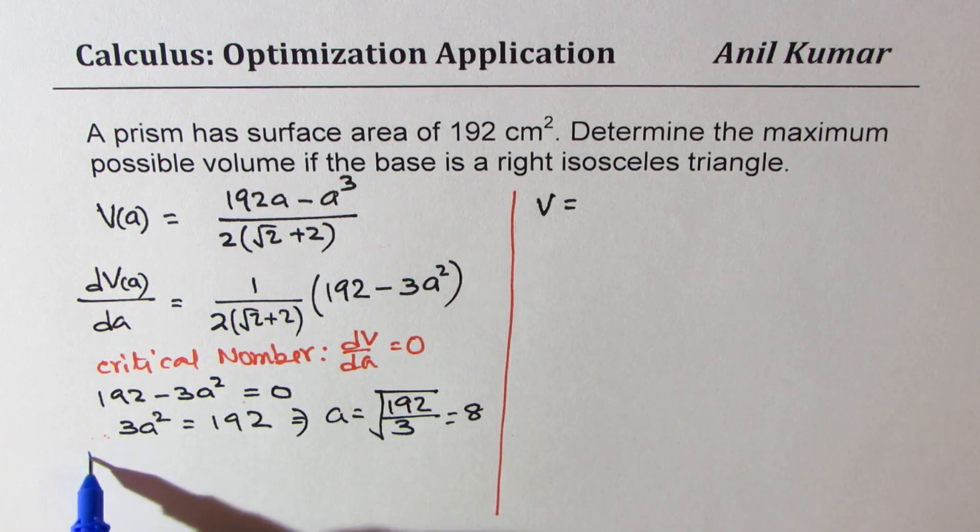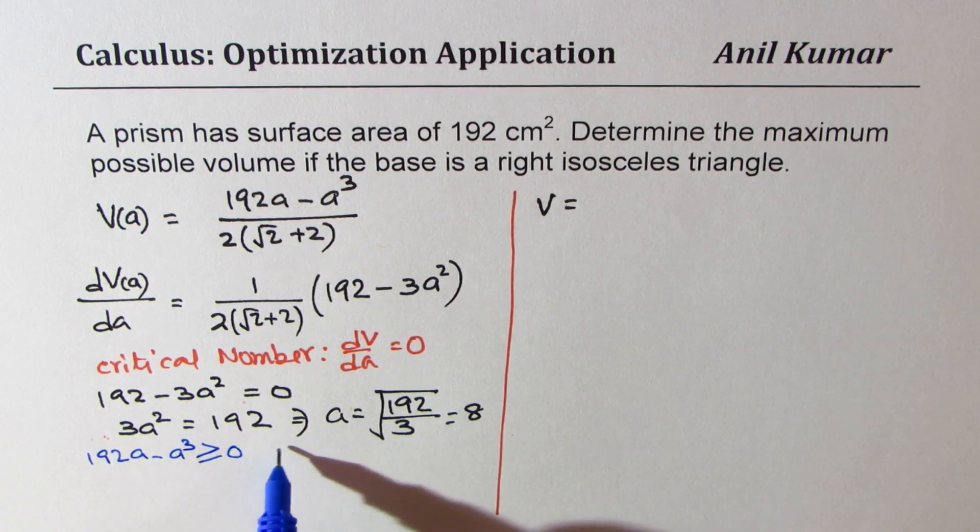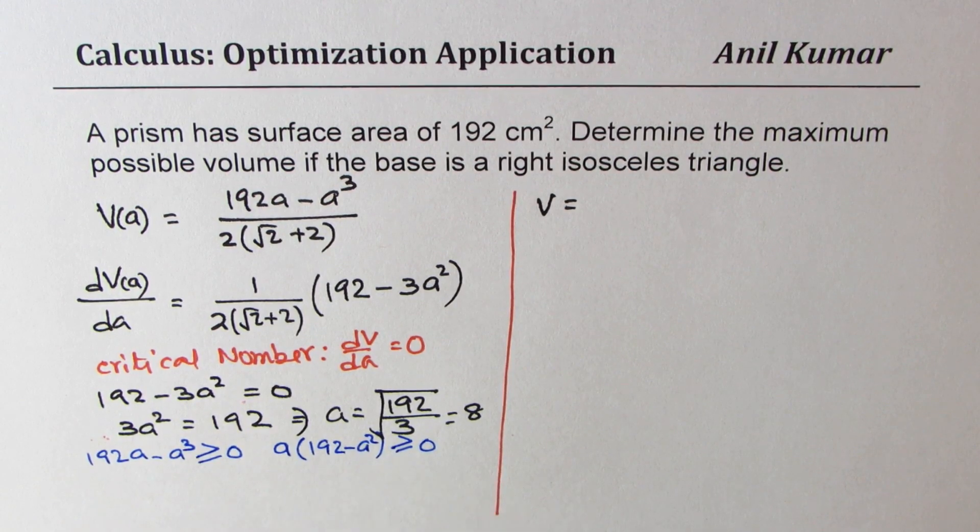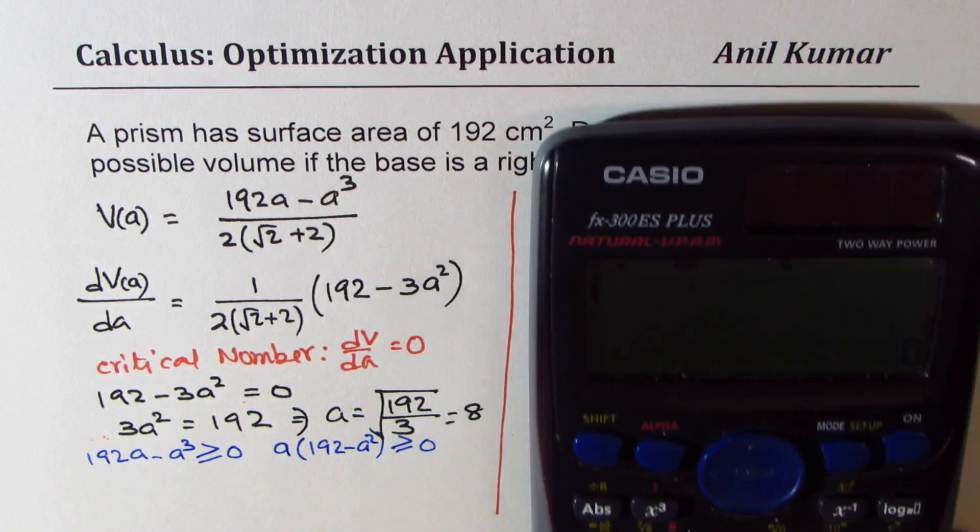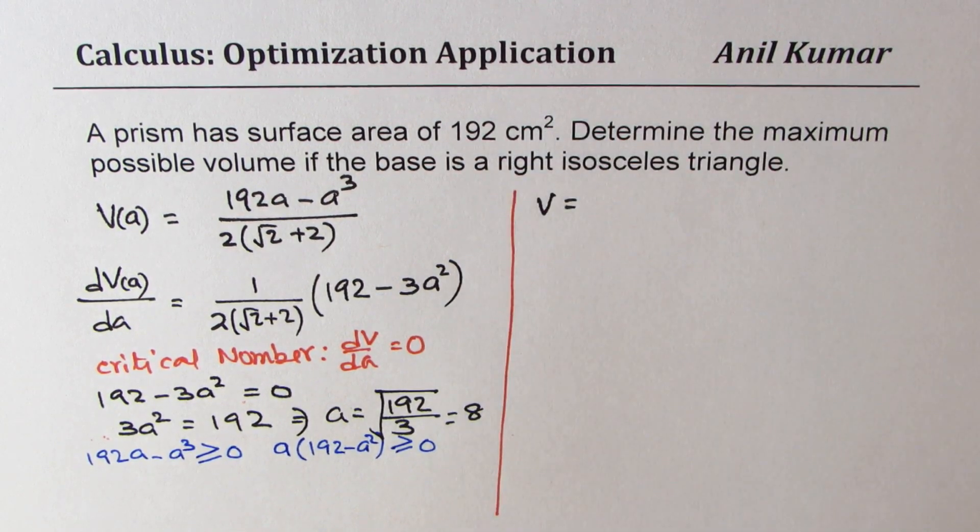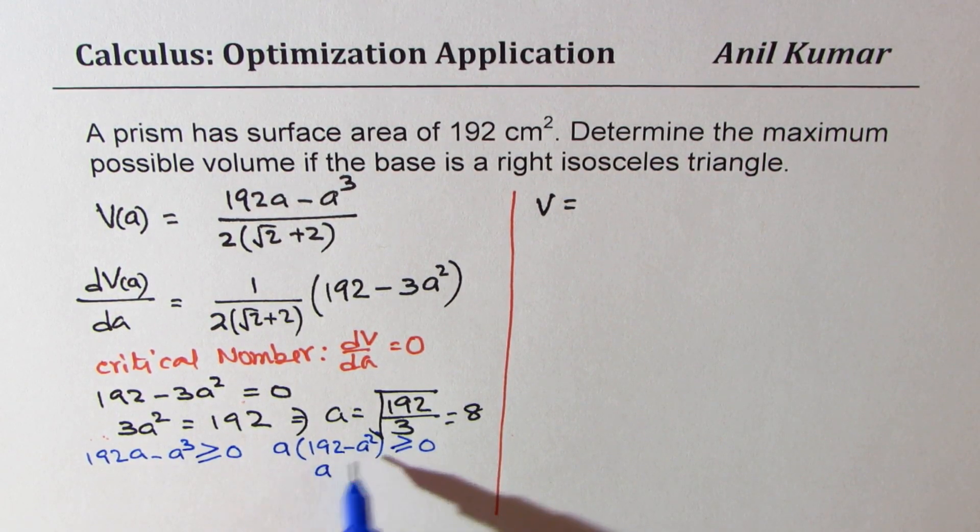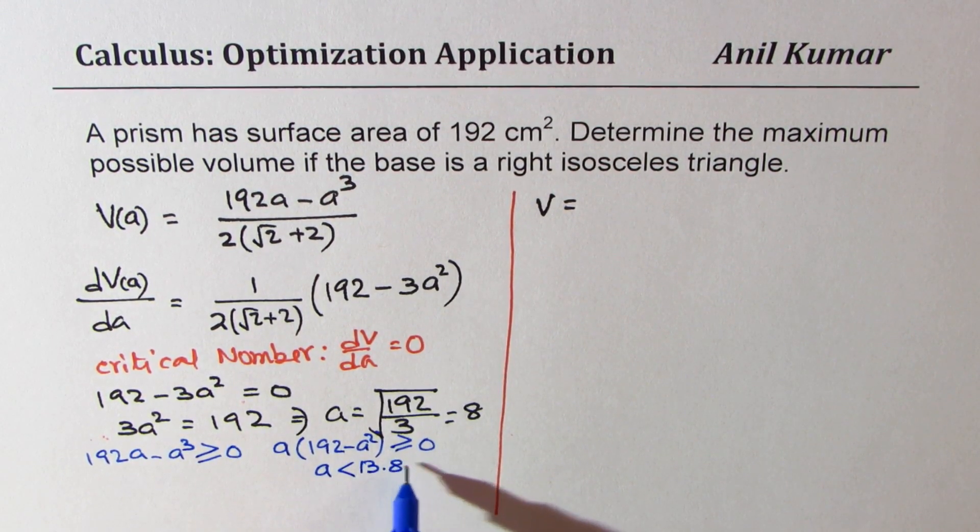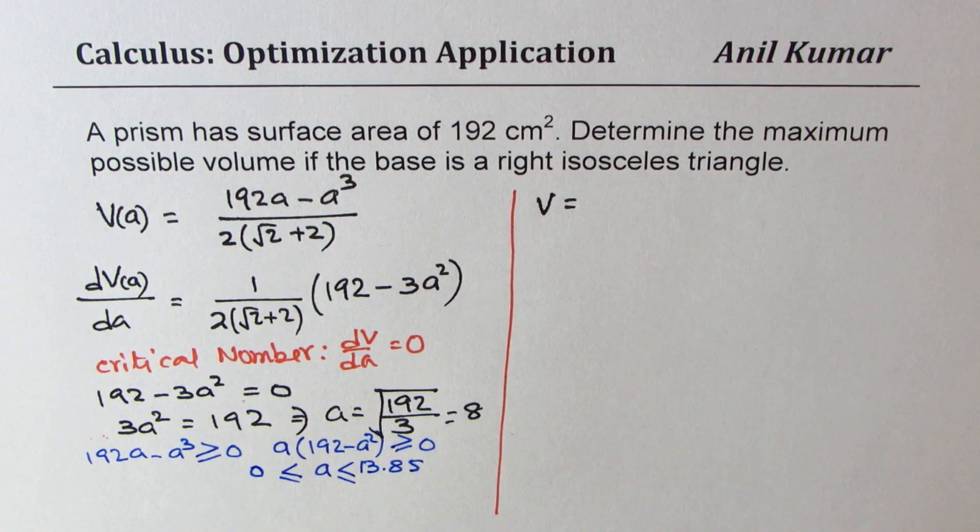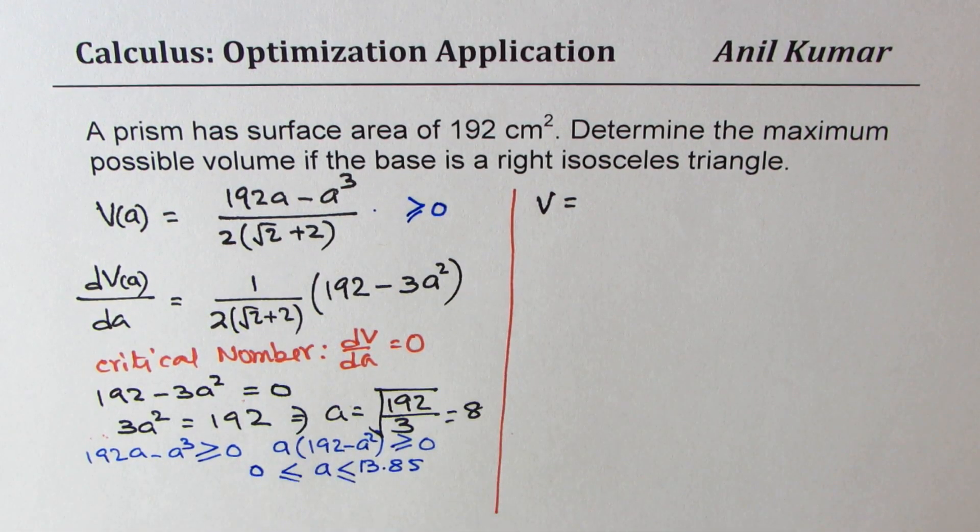So basically, 192a minus a cube should always be greater than equal to 0. So if you factor, you get a times 192 minus a square should be greater than equal to 0. So that gives you the value of a in between square root of 192. Let's find square root of 192, which is 13.85. So that means the value of a should be less than 13.85 and should be greater than 0. So we could say less than or greater than these two values. So these are the extreme values which a can have since this value should always be positive. So that gives you restriction on a.